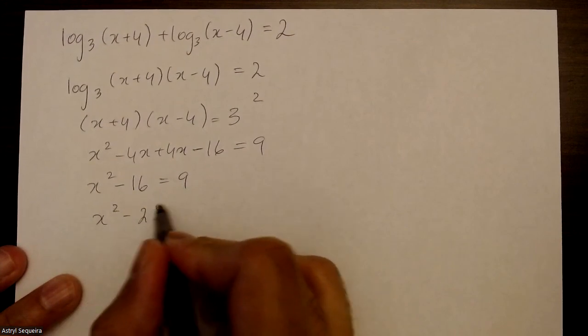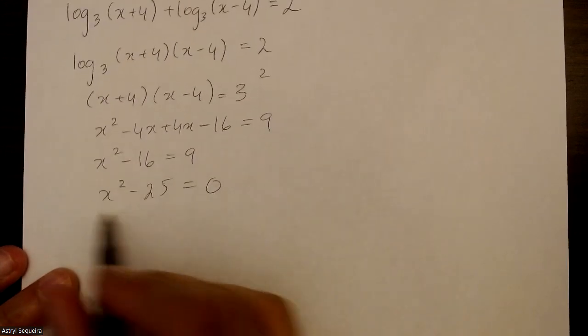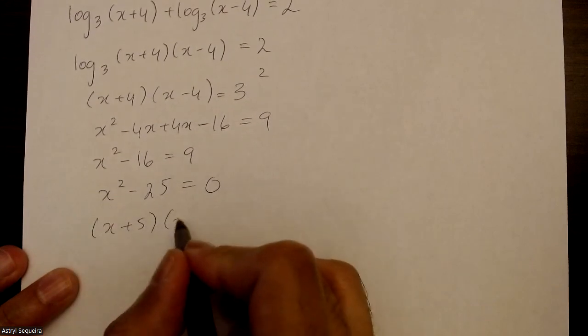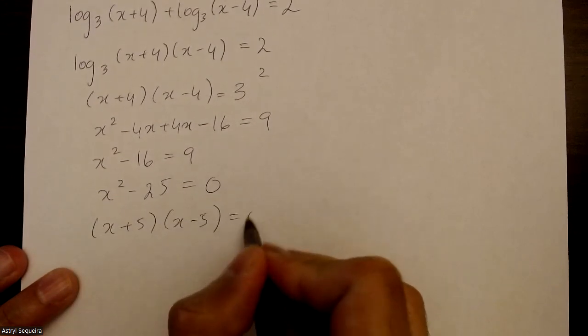Now factor this by difference of squares, so (x plus 5)(x minus 5) equals 0.